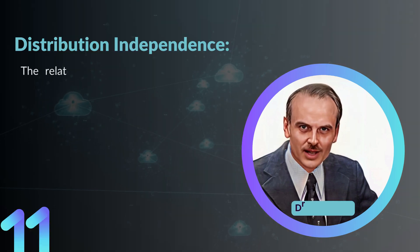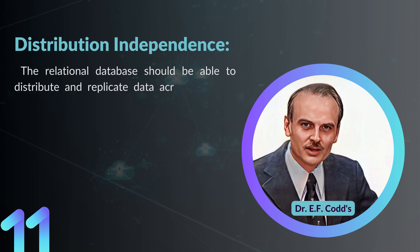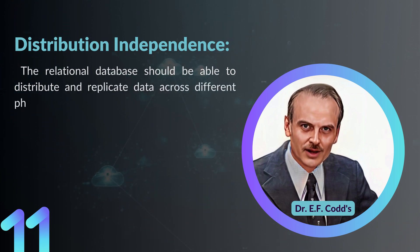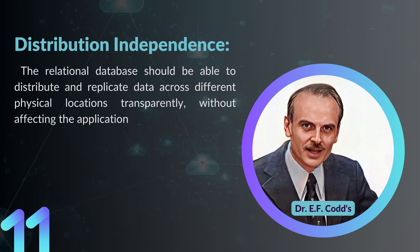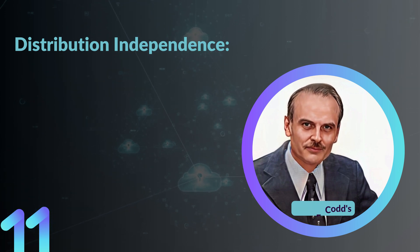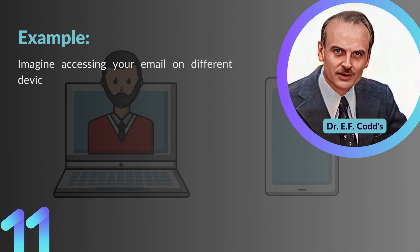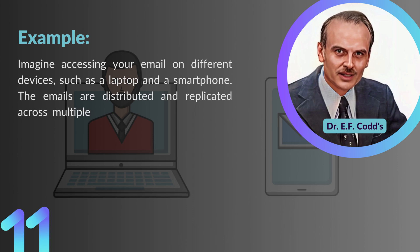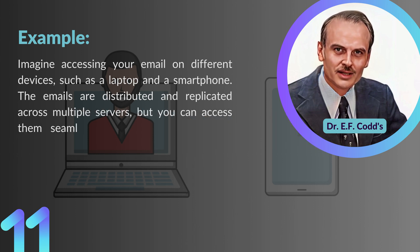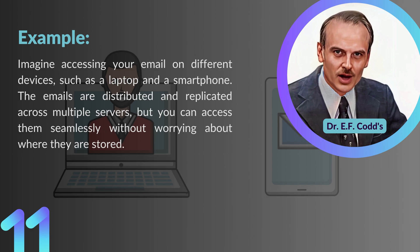Rule number eleven: Distribution Independence. The relational database should be able to distribute and replicate data across different physical locations transparently, without affecting the application programs. For example, imagine accessing your email on different devices such as a laptop and a smartphone — the emails are distributed and replicated across multiple servers, but you can access them seamlessly without worrying about where they are stored.